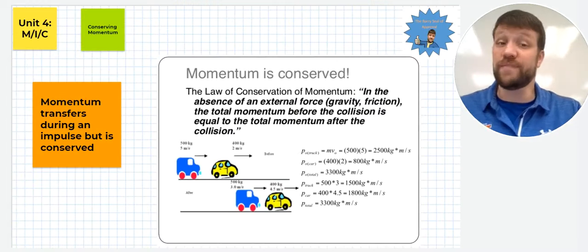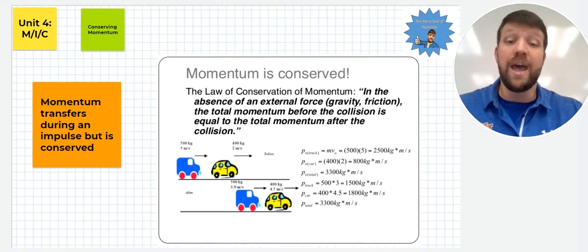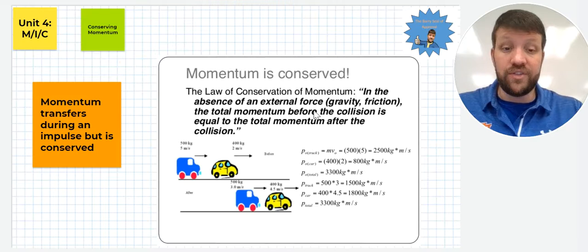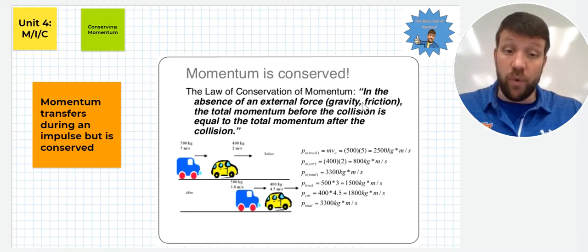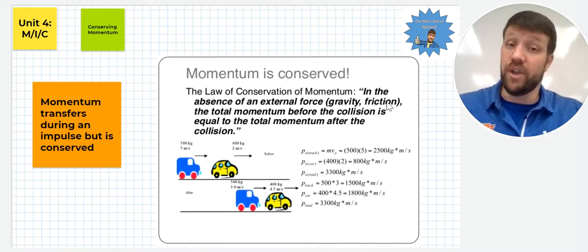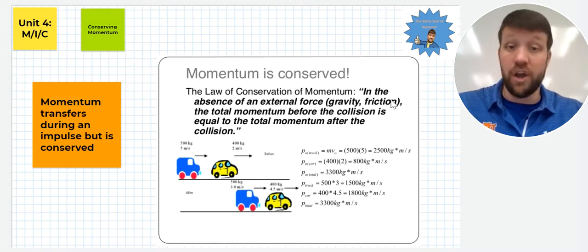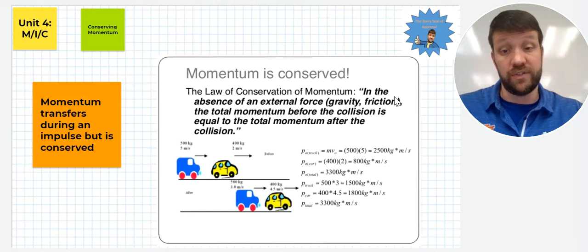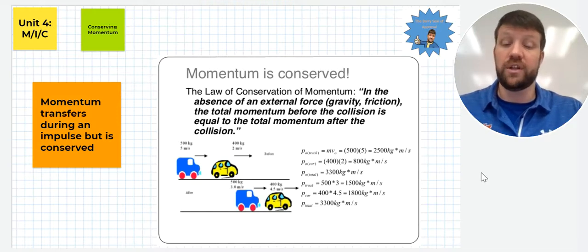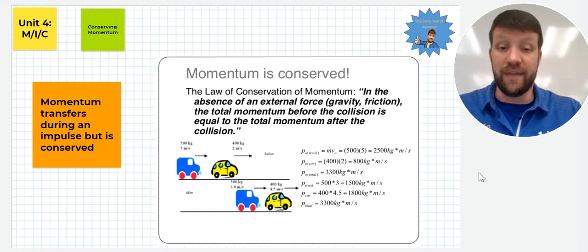We do have conservation of momentum in the same way we had conservation of energy, and they're actually a little tied together. Momentum transfers during an impulse, but it is conserved. In the absence of an external force like gravity or friction—and that's important to note, we are assuming here that we have no friction loss or anything else like that in these types of collisions—in order for momentum to be conserved, the total momentum before the collision is equal to the total momentum after the collision.